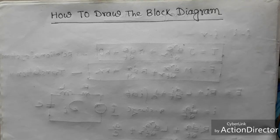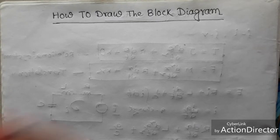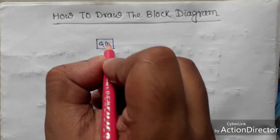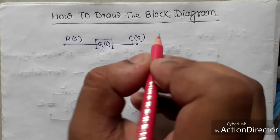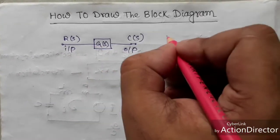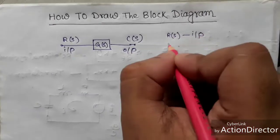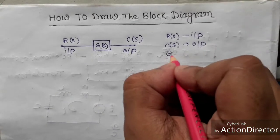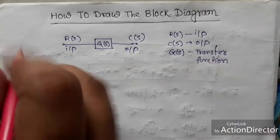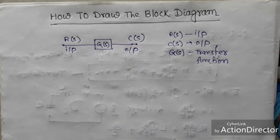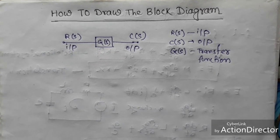A block may represent a single component or a group of components, but each block is completely characterized by a transfer function. Consider one block with transfer function G(s), input R(s), and output C(s). R(s) is always the input and C(s) is the output. You can use different notation depending on your textbook.